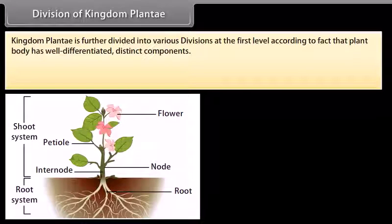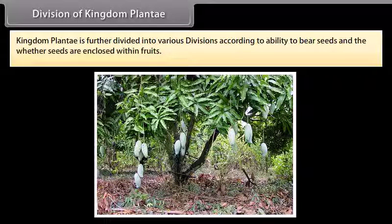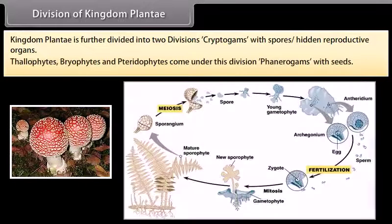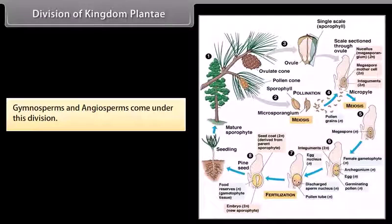Division of Kingdom Plantae: Kingdom Plantae is further divided into various divisions according to whether the plant body has well-differentiated distinct components, whether the differentiated plant body has special tissues for the transport of water and other substances, and according to the ability to bear seeds and whether seeds are enclosed within fruits. Kingdom Plantae is divided into two broad divisions: Cryptogams, with spores and hidden reproductive organs (including Thallophytes, Bryophytes, and Pteridophytes), and Phanerogams, with seeds (including Gymnosperms and Angiosperms).